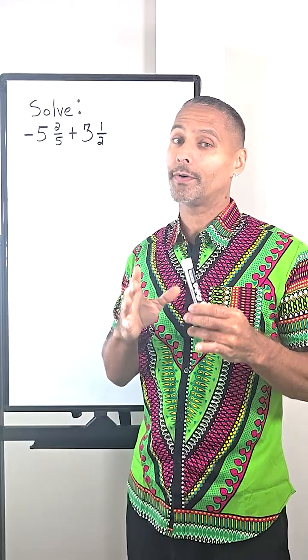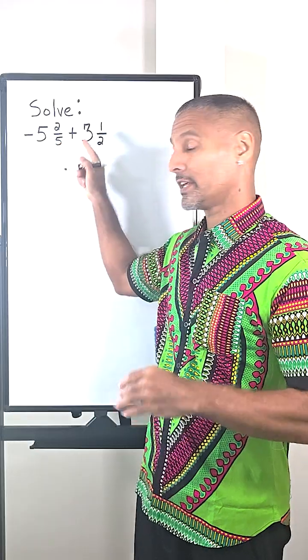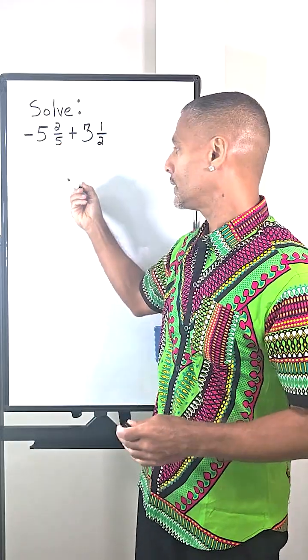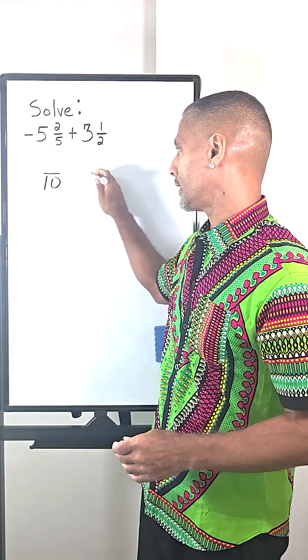All right, so let us go ahead and find a common denominator first. So we're going to take these two denominators here, which are a five and a two and change them to the lowest common denominator of 10.